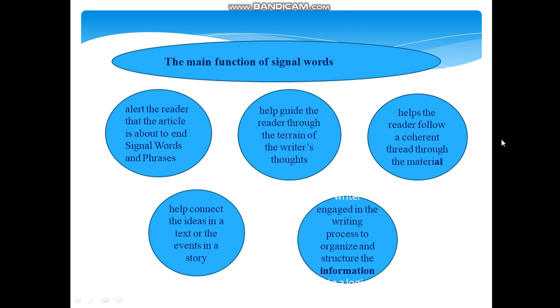The main function of signal words. To alert the reader that the article is about to end signal words and phrases. To help guide the reader through the terrain of the writer's thoughts. It helps the reader to follow a coherent thread through the material. It also helps to connect the ideas in a text or the events in a story. And writer is engaged in the writing process to organize the information.